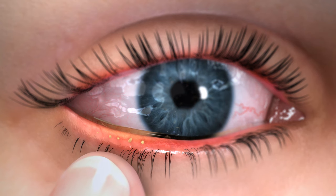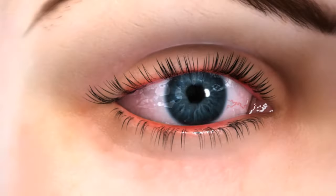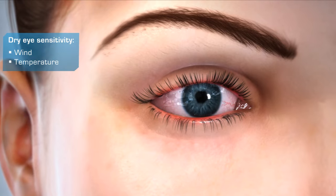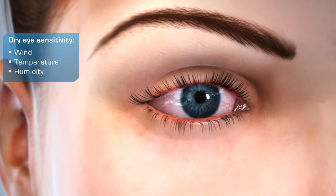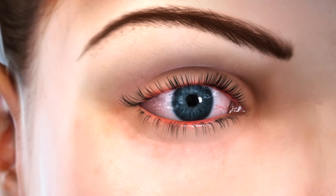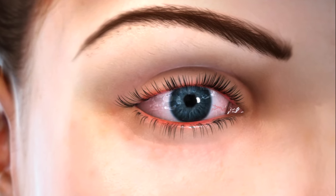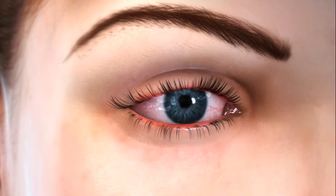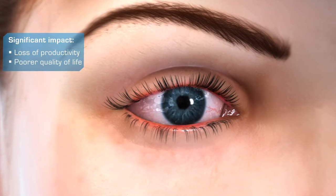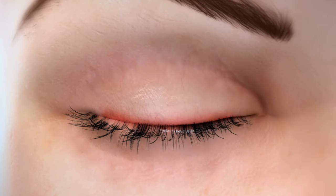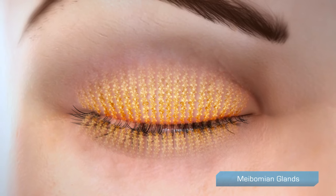As the condition worsens, eyelids display signs of inflammation and dilated blood vessels. With dry eye, sensitivity to environmental factors like wind, temperature, and humidity increases. Interference with normal vision may become noticeable. Often the individual considers it part of the normal aging process, when in fact dry eye can have a significant impact, causing loss of productivity and poorer quality of life.